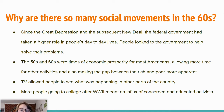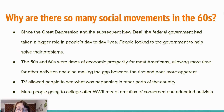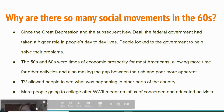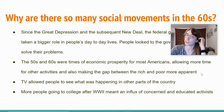Two, the 50s and 60s were times of economic prosperity for most Americans. Most Americans were getting paid better wages, which allowed more time for other activities and also made the gap between the rich and the poor very, very obvious. So people who were leading these different social movement groups were trying to bring attention to this gap between the rich and poor.